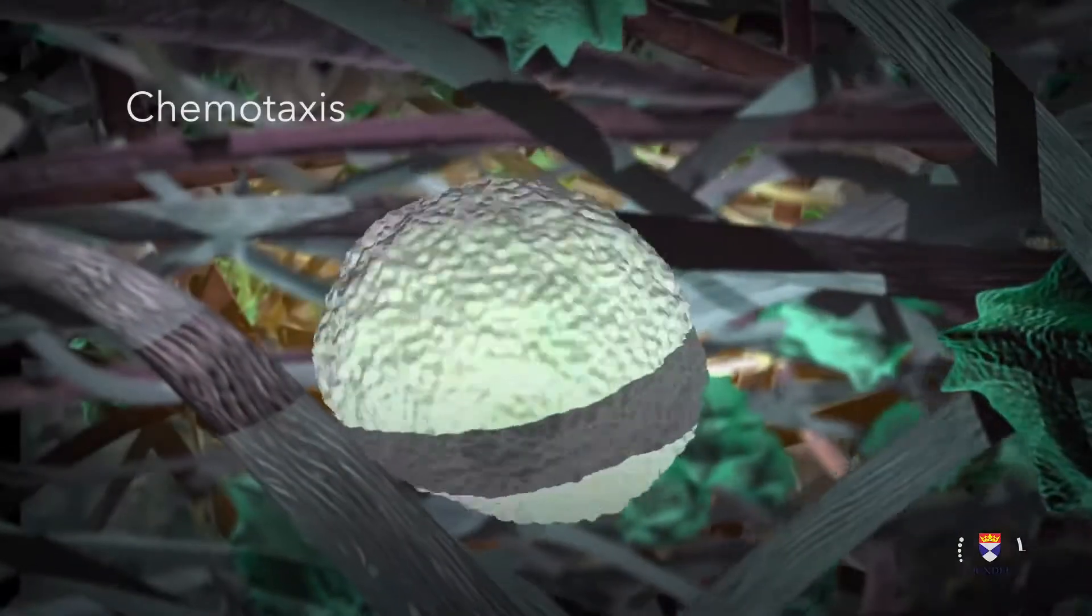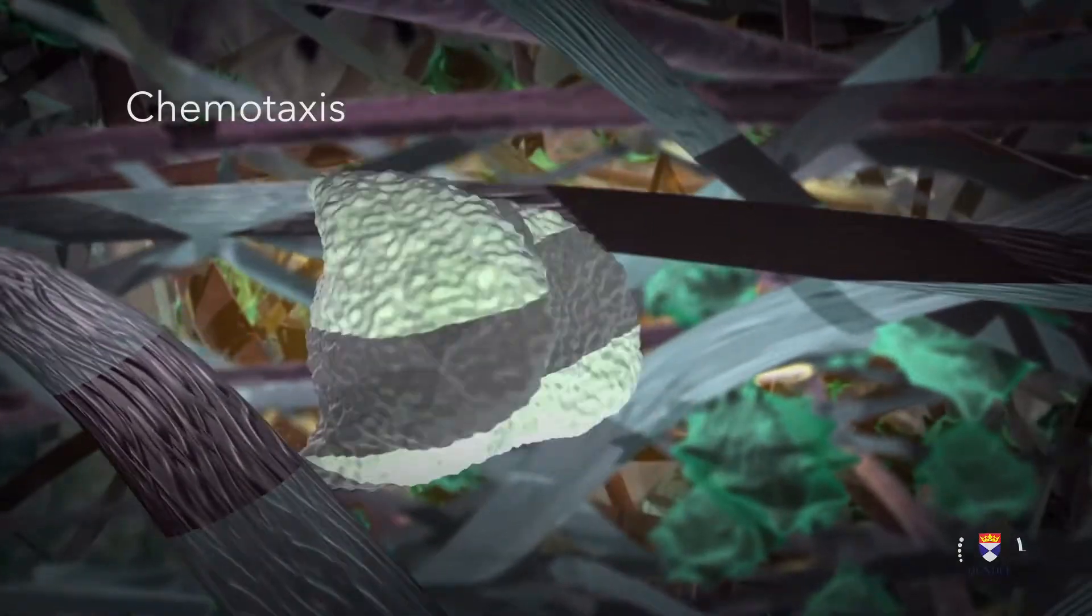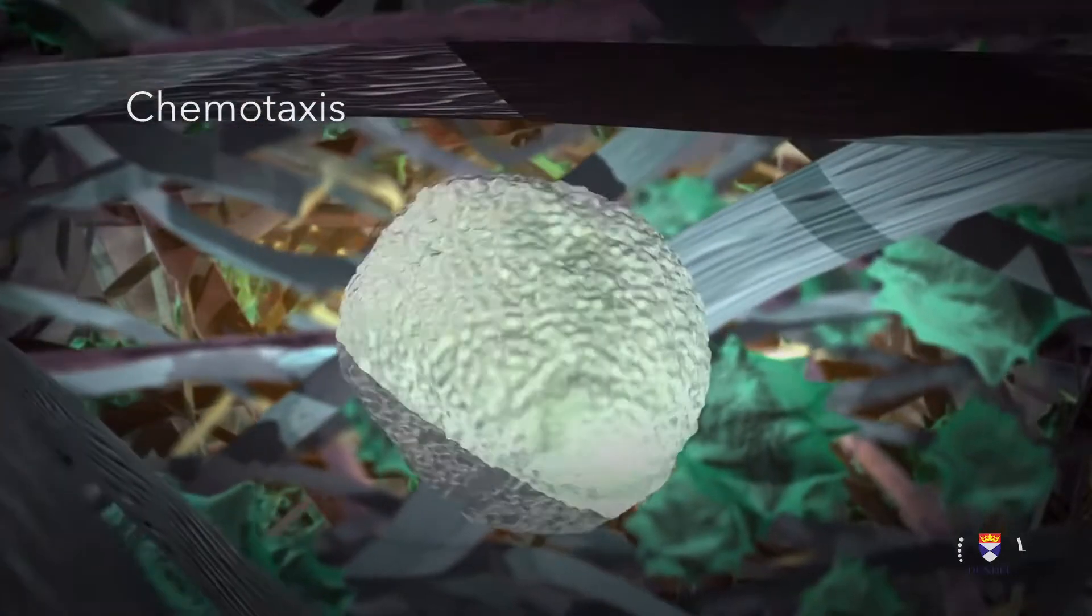Once in the extravascular space, the leukocyte begins to migrate to the site of injury by following a chemical gradient.